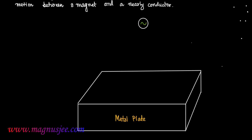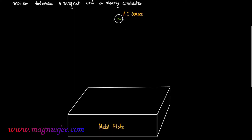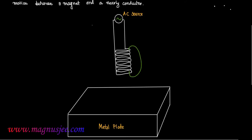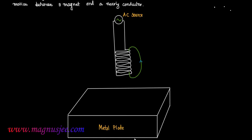In the diagram, we have a metal plate and an AC source. To this AC source, a coil is connected which is placed above the metal plate. If alternating current flows through this coil, this type of circular magnetic field will be obtained.